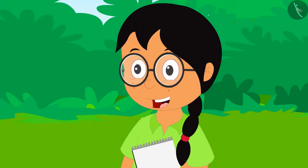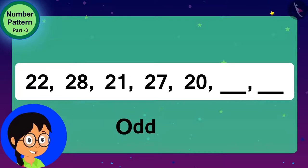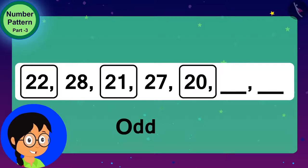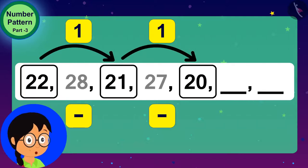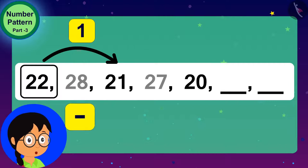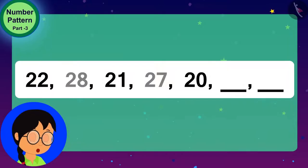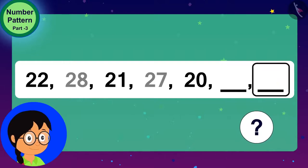Meenu excitedly said, I have found another rule of this number pattern. If you look at the numbers written at odd places of this number pattern, you will find that the numbers written at these places are 1 less than the numbers coming before them. 1 is subtracted. As the number written in the first place is 22, and the number written in the third place is 1 less than that, 21. So, what do we have to do to get the number written in the seventh place? Meenu asked the audience.